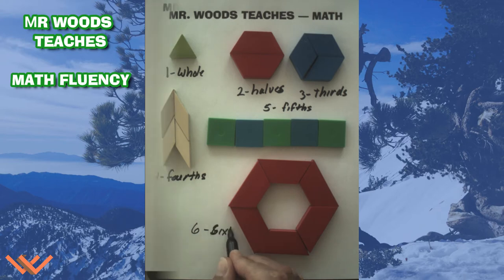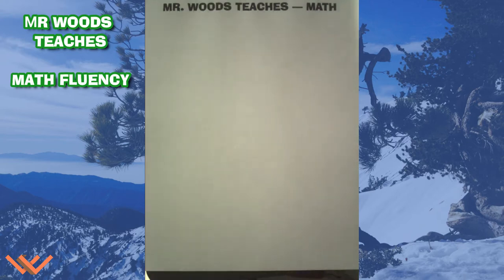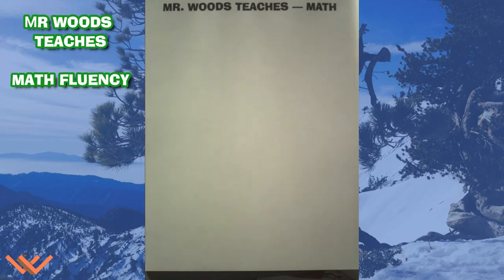Let's review real quick. We know one is a whole, two are halves, three are thirds, four are fourths, five are fifths, six are sixths. Now what are eight? Well, eight are — let's take a look and put down eight to begin with.